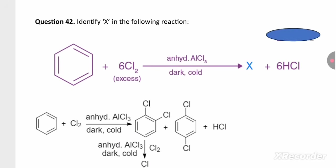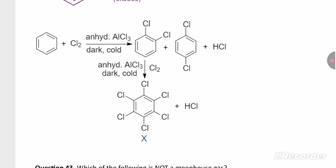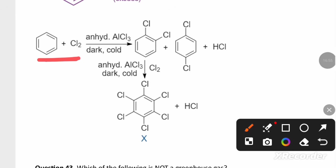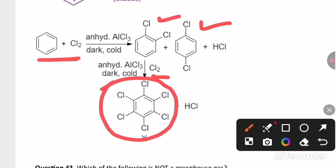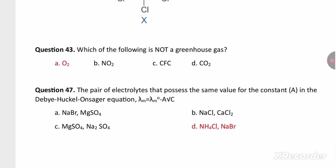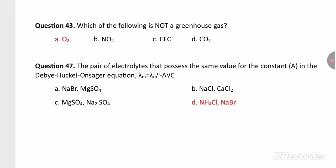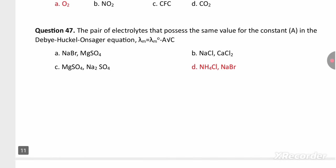Benzene on treating with chlorine in the presence of anhydrous aluminium chloride gives ortho and para dichlorobenzene. Ortho-dichlorobenzene in the presence of excess chlorine forms hexachlorobenzene. Oxygen is not a greenhouse gas.